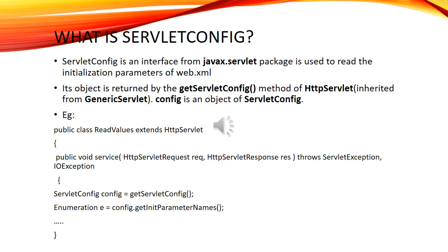What is servlet config? Servlet config is an interface from the javax.servlet package used to read the initialization parameters of web.xml. Its object is returned by the getServletConfig() method of HttpServlet, inherited from GenericServlet. CONFIG is an object of servlet config.